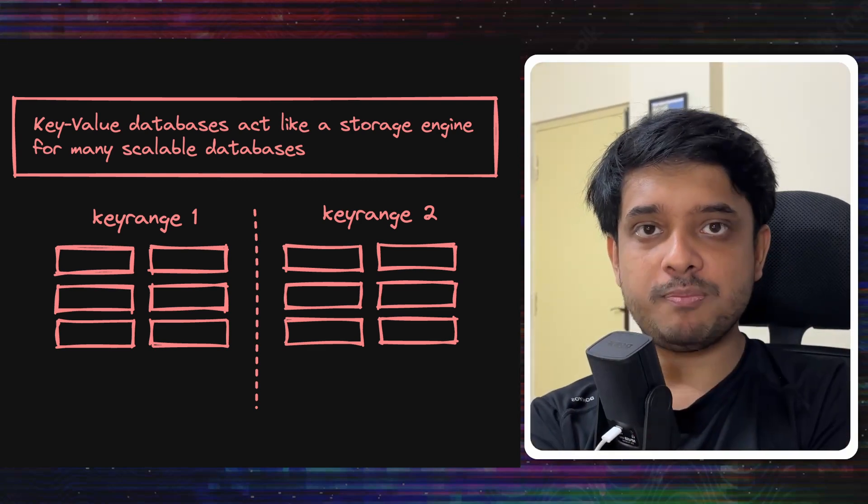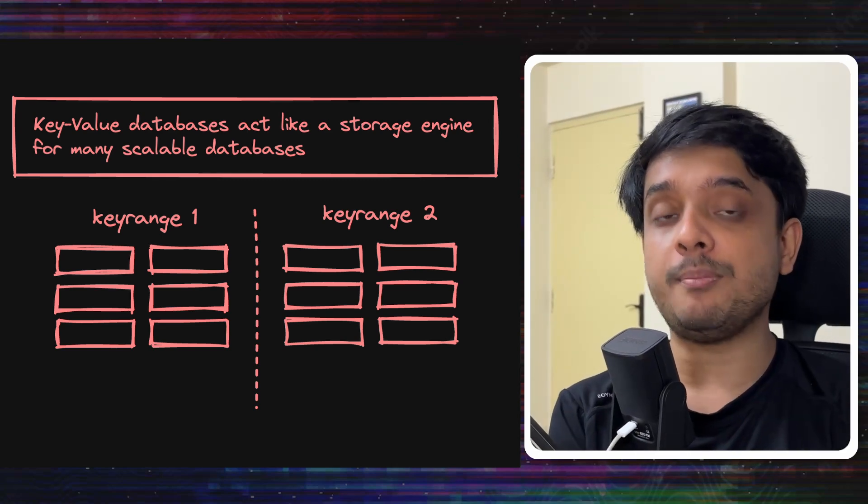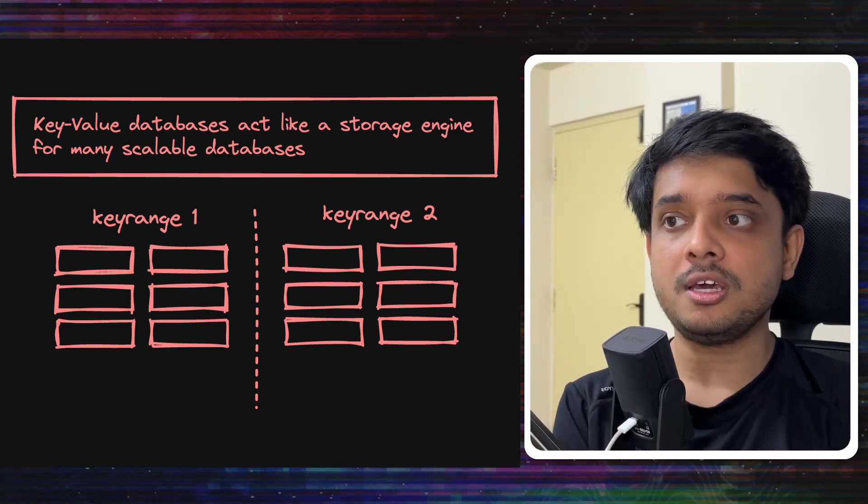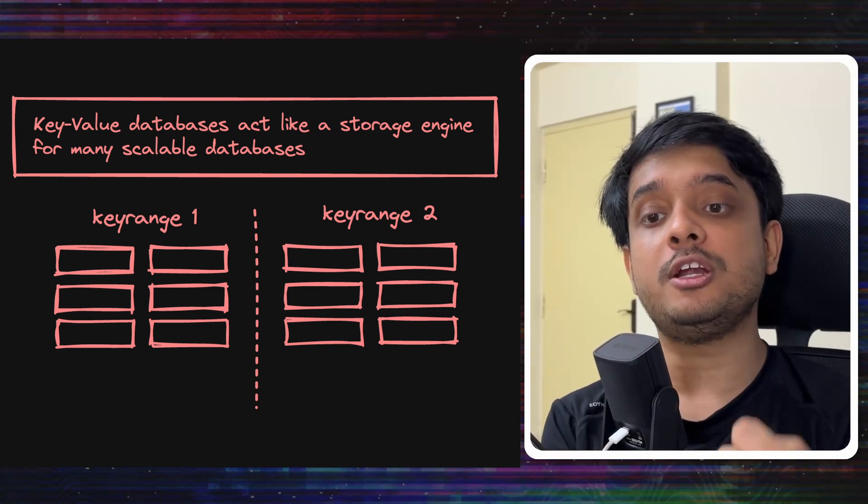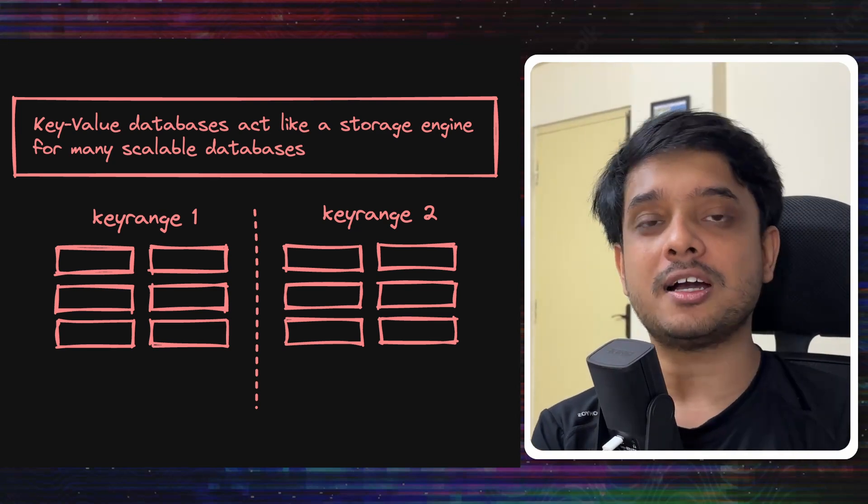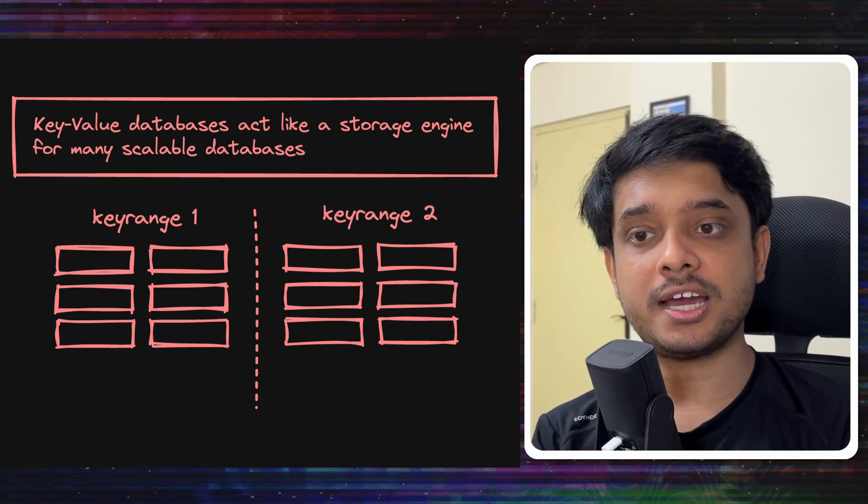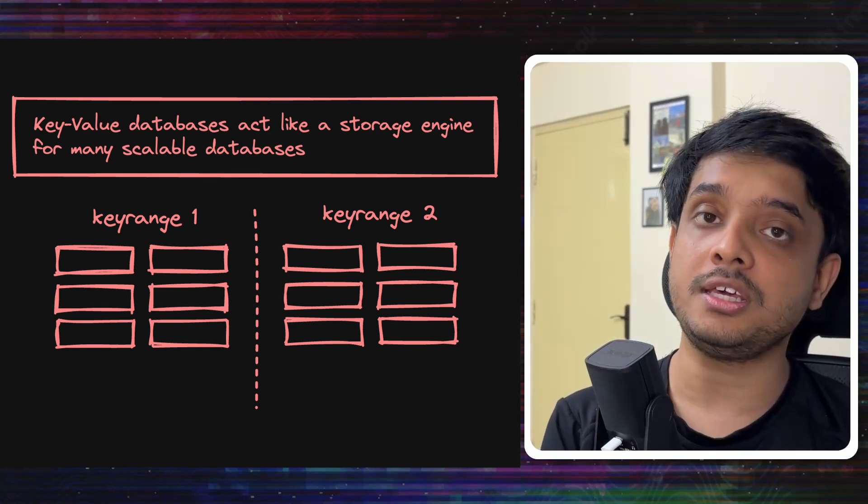So it makes sense to implement other databases on top of these key value embeddable databases like RocksDB because they act like a storage engine for the databases that are built on top of them. You will not need to build a completely new storage engine when you already have something in hand.